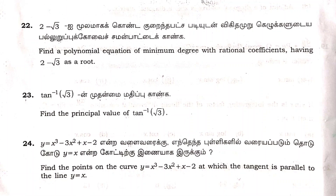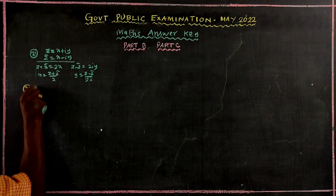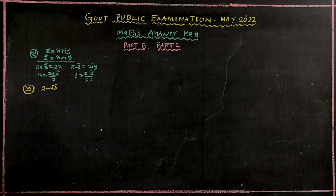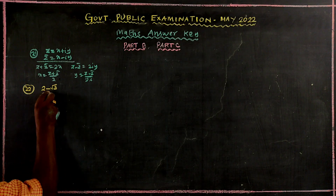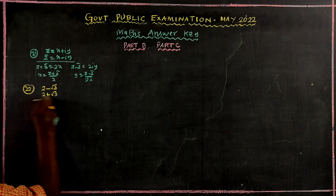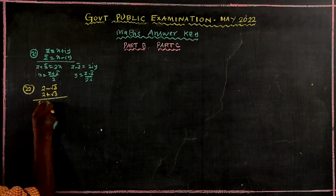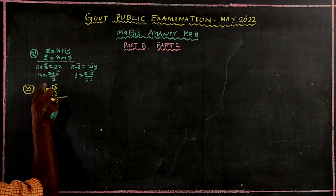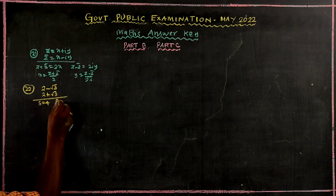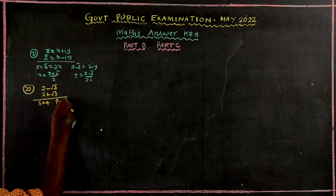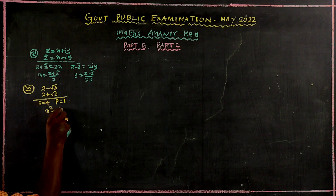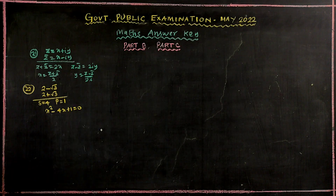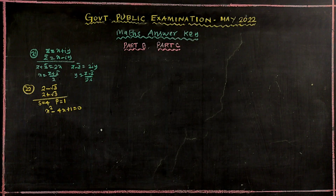Problem number 22: we have an equation where one root is 2 minus root 3. Since the root is irrational, the other root is 2 plus root 3. The sum of roots is 4. The product of roots is (2+√3)(2−√3) = 4 minus 3, which equals 1. The equation is x squared minus sum of roots times x plus product of roots equals 0.